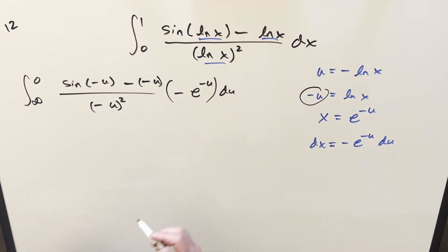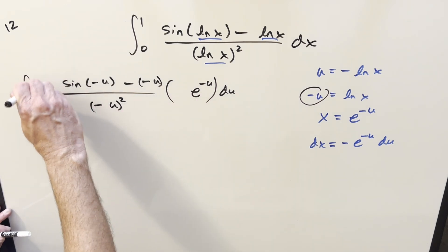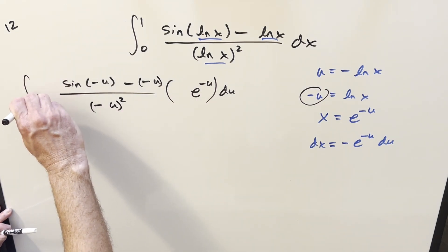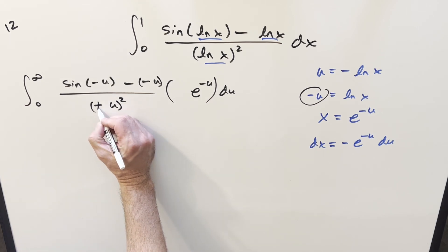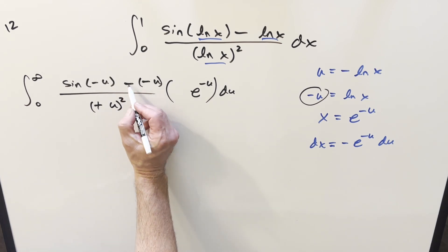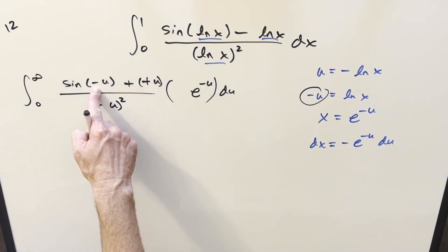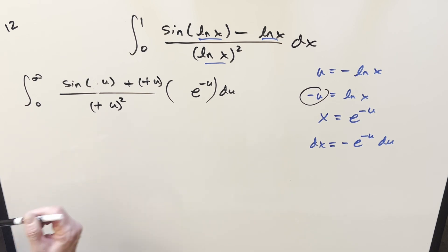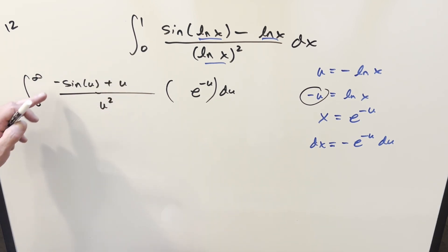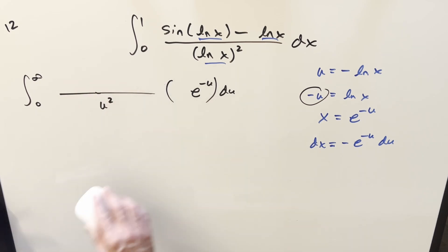I want to take this minus sign and use it to flip the bounds around, getting infinity on top. When we square (-u), that becomes plus. In the numerator, minus times minus is plus. Using the fact that sine is an odd function, we take the minus out front and reorder the numerator to write it as u minus sine u.